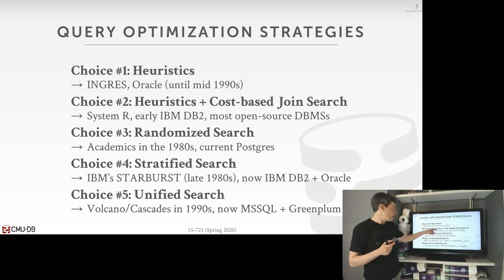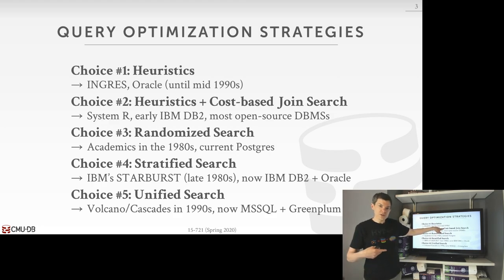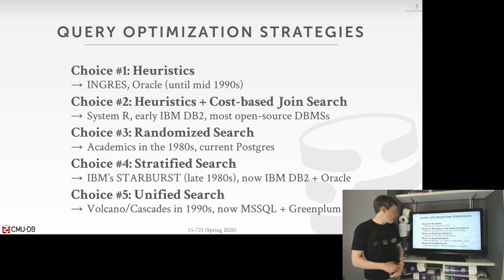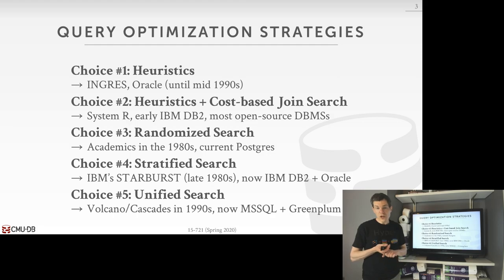The key idea that makes the cost-model-based approach different is that the cost model guiding our search is a way for us to approximate the cost of a query plan, and then use that approximation to compare one plan versus another. We then talked about how to do a randomized search with simulated annealing or the genetic algorithm from Postgres.